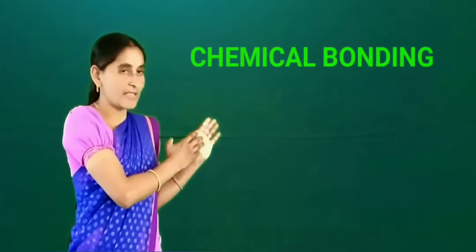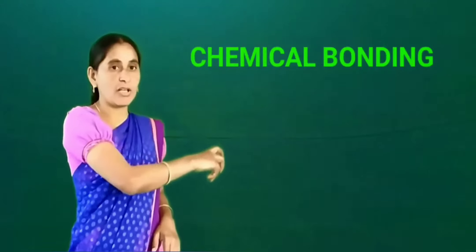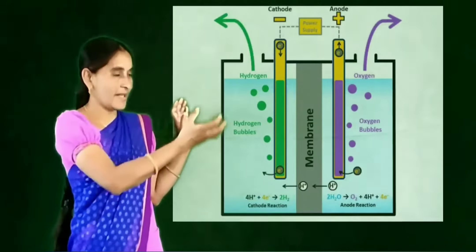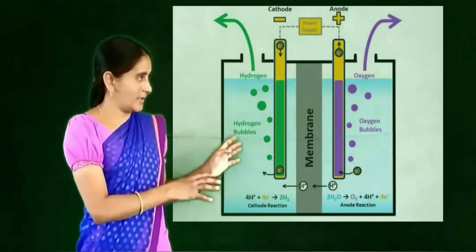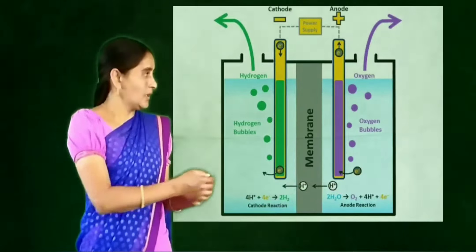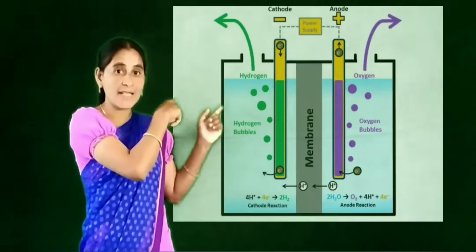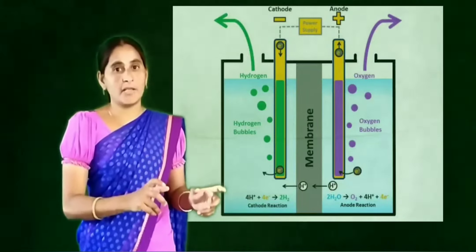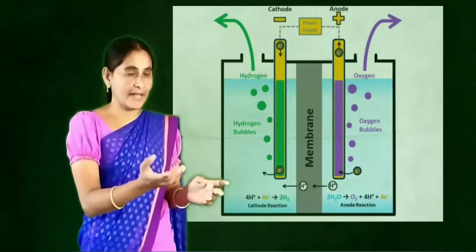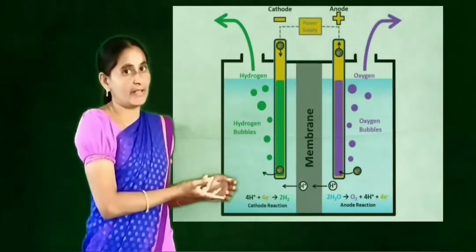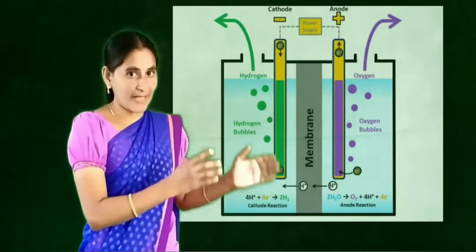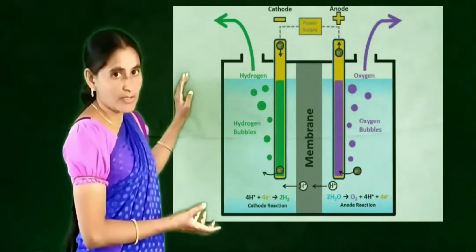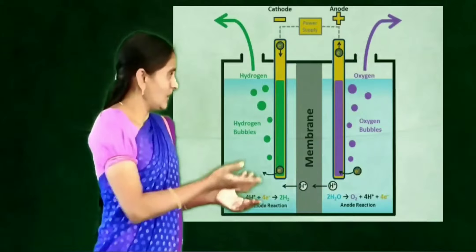Sir Humphrey Davy, in the years 1778 and 1819, explained with one electrolysis experiment. He took anode and cathode rods, took the metal NaCl, poured it in and passed electricity. Unexpectedly, he observed that sodium metallic ions are going towards the non-metallic rod and non-metallic ions are going towards the metallic rod. He started thinking about the reason behind it. From this, he observed that metals are ready to lose electrons and non-metals are ready to gain electrons.